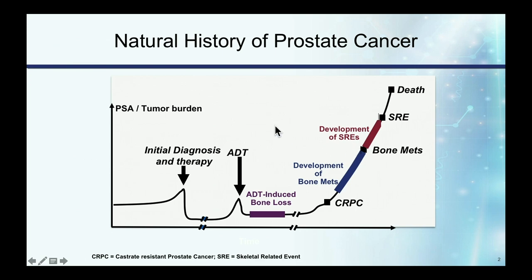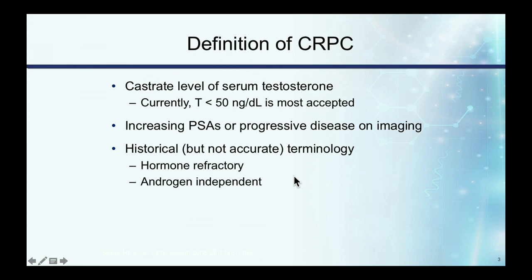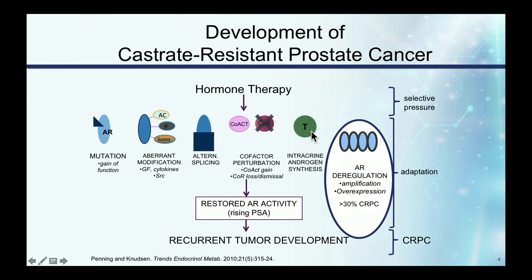Metastasis to the viscera also occurred. The definition of castrate resistant disease is based upon a patient having a serum testosterone of less than 50 — that's the most accepted guideline, though some believe less than 30 is preferable. The definition also includes an increasing PSA or progression on bone scan or CT imaging. This has been called hormone refractory disease or androgen independent disease, though I prefer 'endocrine resistant' because many patients find 'castrate resistant' to be a pejorative term.